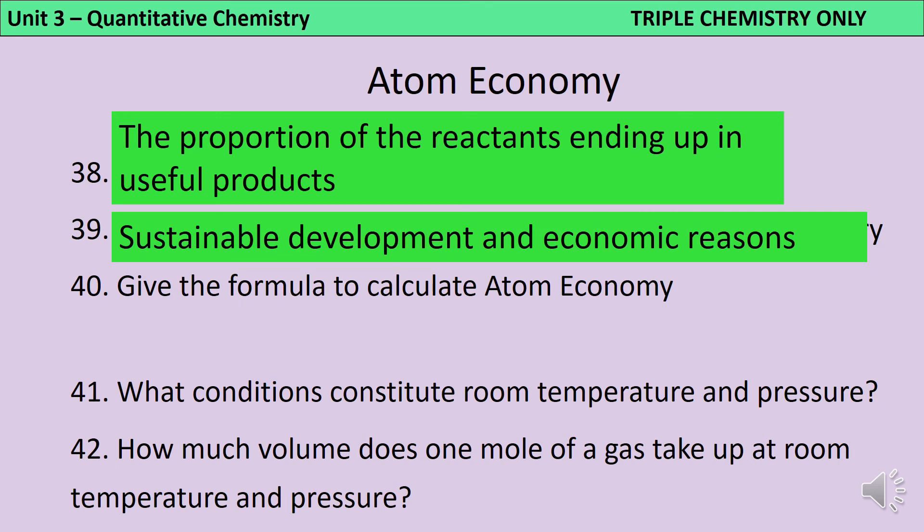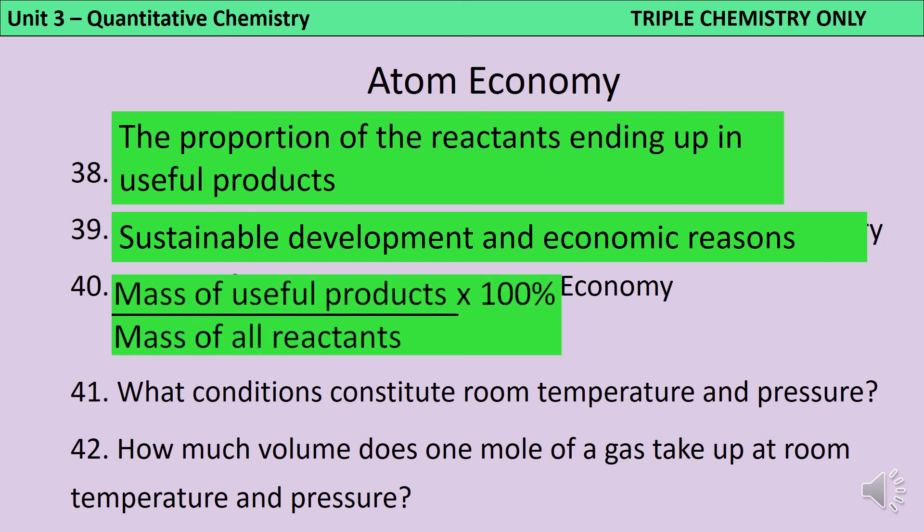To calculate atom economy, we look at the mass of the useful products and divide that by the total mass of the reactants and multiply that by 100%. You may also see this written as mass of useful products divided by the mass of all products. And that's what I tend to do because it's an easier calculation. But as we know, the law of conservation of mass tells us that the mass of the reactants and the mass of the products will be exactly the same. So we can just substitute them in.